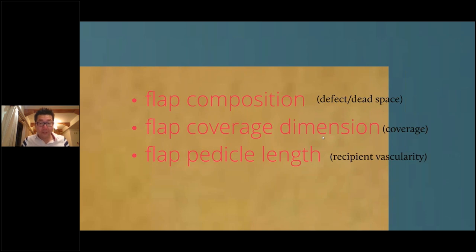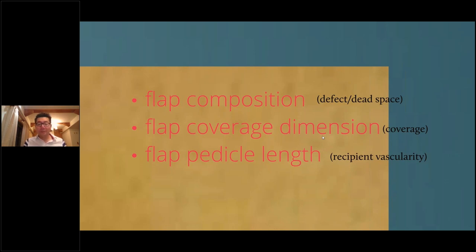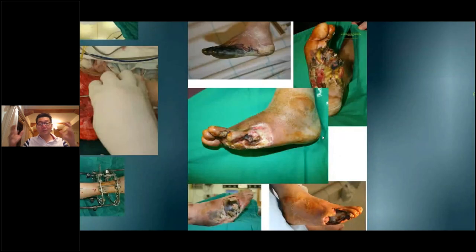How do we choose these flaps? We thought about the defect — this patient is missing muscle and part of the skin. So if the flap is composed of muscle and skin, that'll probably be the best. How large is the defect? We have to think about flap coverage dimension. And remember the recipient vessel was the posterior tibial, so if you want to do an end-to-side anastomosis, you have to take a long pedicle flap. So the question is: is there a flap that gives me a muscle-skin composition able to cover a larger-than-palm-size defect and also give me a long pedicle?